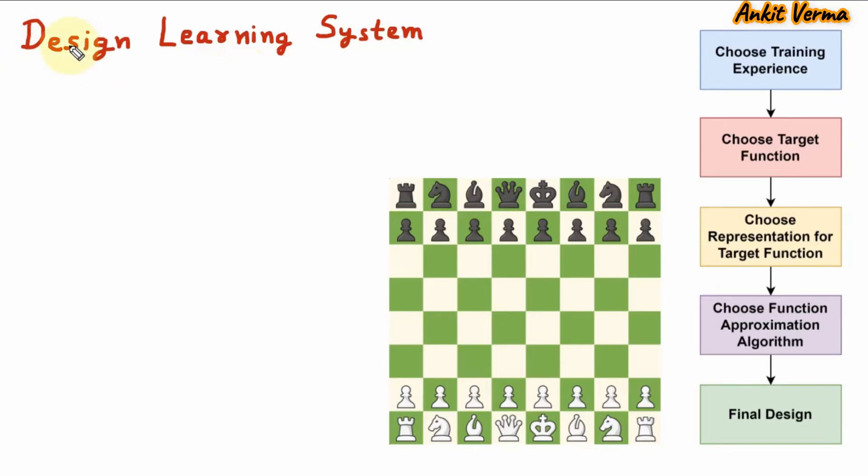We must design the learning system because learning system must be perfect and efficient. When we design a machine learning model, that model automatically learns from the experience. So learning system should be perfect and efficient so it can learn very easily and give accurate results.